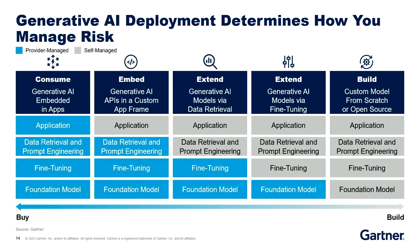What you use will depend on your deployment approach — not everybody deploys the same way. On the left, everything is from the provider: the application, data retrieval, fine-tuning, and the model — applications like ChatGPT or Office 365 where they control the entire stack. In the middle, you can build your own application, do your own data retrieval and prompt engineering, your own fine-tuning. And on the right, you can have your own model using open source or building it yourself. Most of our clients are in the first two columns. You can hardly ever manage your own foundation model, and there's nothing you can do to control it — all you can do is control the inputs and the outputs.